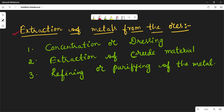Extraction of metals from ore is not an easy task — it involves three stages. The first stage is concentration or dressing of the ore. The second stage is extraction of crude metal. The third stage is refining or purifying of the metal. Each stage involves a number of methods and procedures.